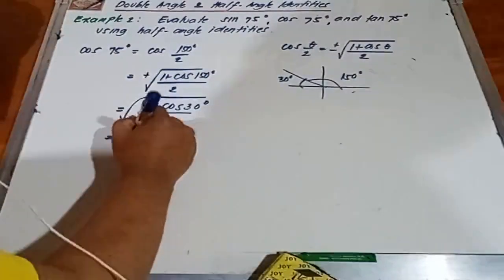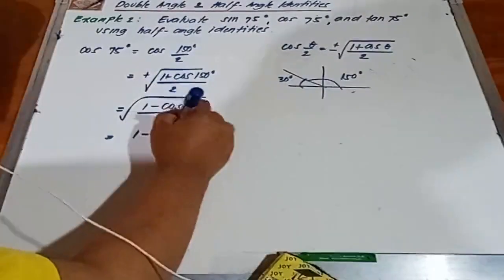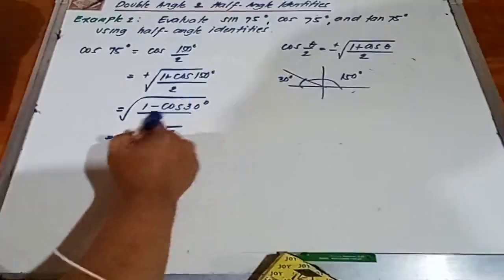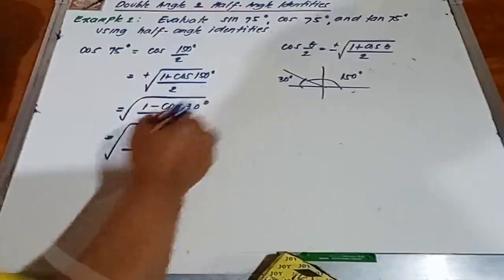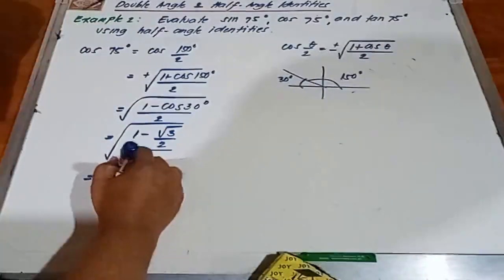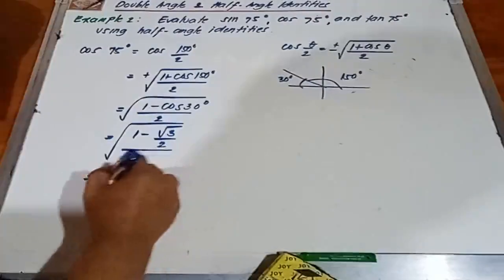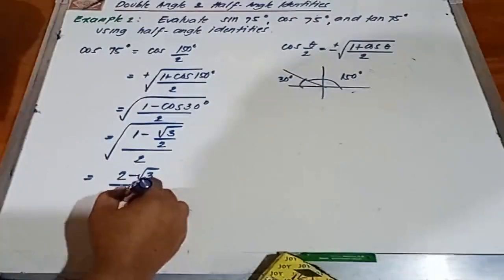Next, 1 minus cosine 30 is square root of 3 over 2, over 2. Next, LCD is 2: 2 minus square root of 3 over 2 times 2.